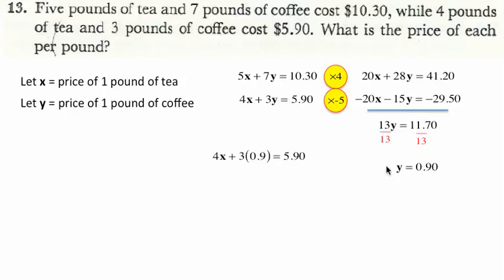I'm going to plug this into one of these two equations. I'm going to take the bottom one because the numbers are all smaller. I have 4 times the price of one pound of tea plus 3 times the price of one pound of coffee, which we now know is 90 cents, equals 5.90. 3 times the 90 cents is $2.70.